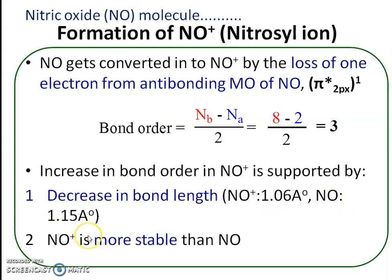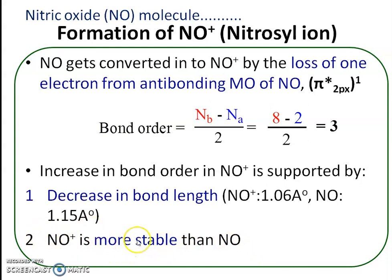Another important supporting point is stability. When we compare stability, the nitrosyl ion is more stable than nitric oxide. Stability depends upon bond order — greater bond order means greater stability. This also supports the higher bond order in the nitrosyl ion. After discussion of the molecular orbital diagram for nitric oxide, the next point is the MO diagram for carbon monoxide.